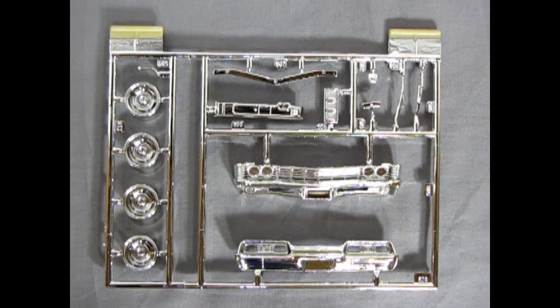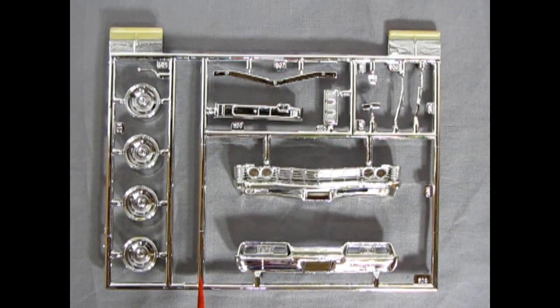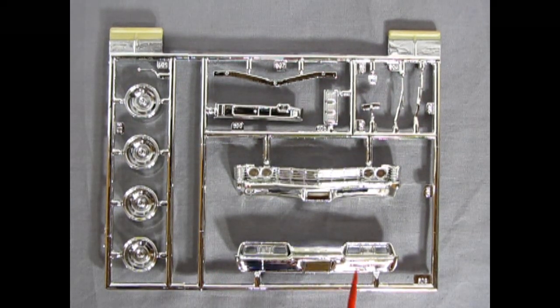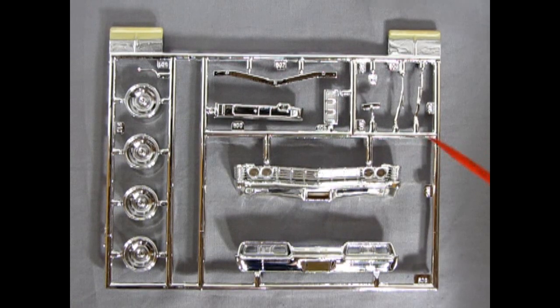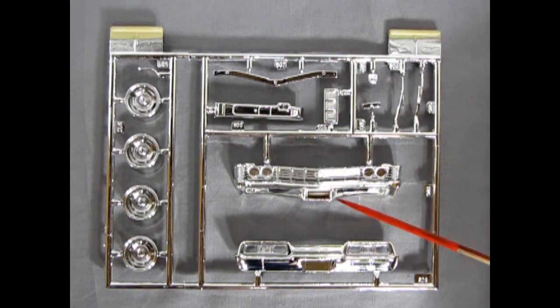And here it is, the chrome parts tree. In the future, everything is chrome. To quote Spongebob. So, anyway, here we've got the front grille. The nice SS Impala right there.